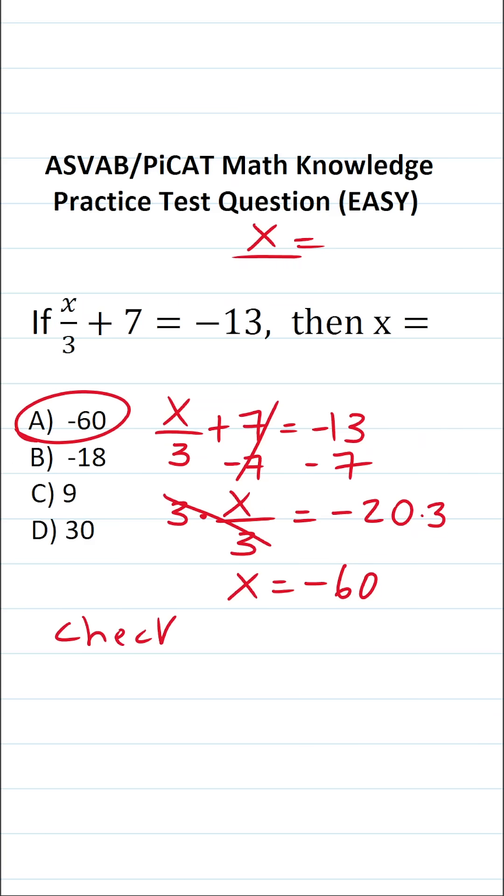Now if you're ever unsure about your answer when you're solving an equation you can always quickly check your work. Again the equation is x over 3 plus 7 equals negative 13. We now know that x is negative 60. So let's go ahead and plug this in and if this makes a true mathematical statement we know we did our work correctly.